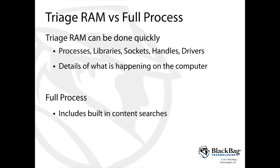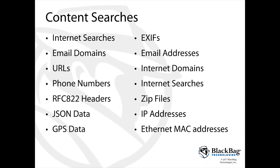The other option Blacklight gives you is full processing of the evidence, which does everything triage does but also includes built-in content searches run automatically. These include internet searches, email domains, email addresses, URLs, phone numbers, RFC 822 headers, JSON data, GPS data, EXIF data, internet domains, zip files, IP addresses, and Ethernet MAC addresses — all shown directly within Blacklight.